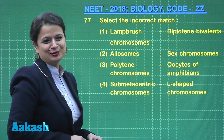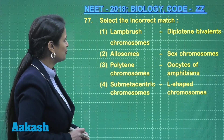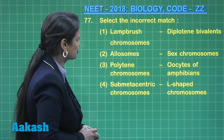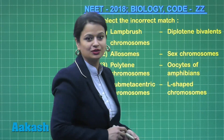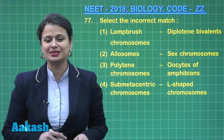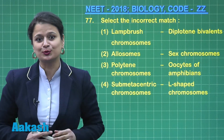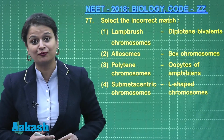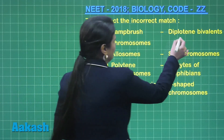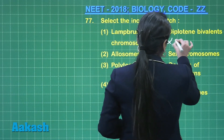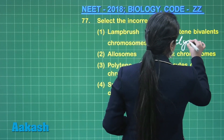Now it is the time to discuss question number 77. Coming to the first option, lampbrush chromosomes are present in the diplotene stage. They give a brush-like appearance, they are giant chromosomes, and they are formed in the suspended diplotene stage. This suspended diplotene stage is known as the dictyotene stage.